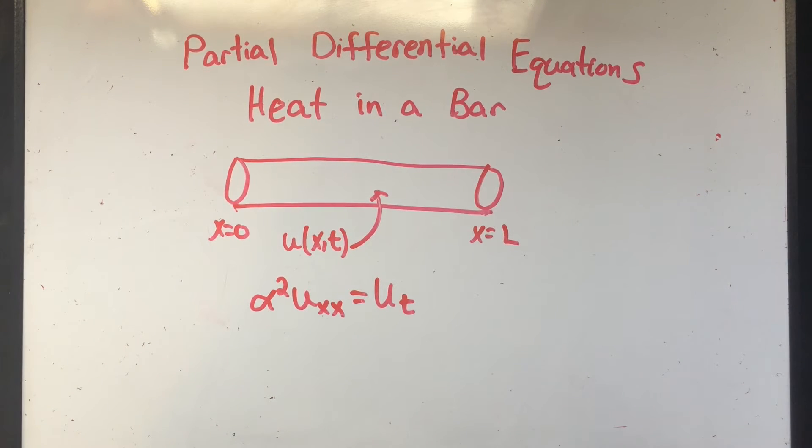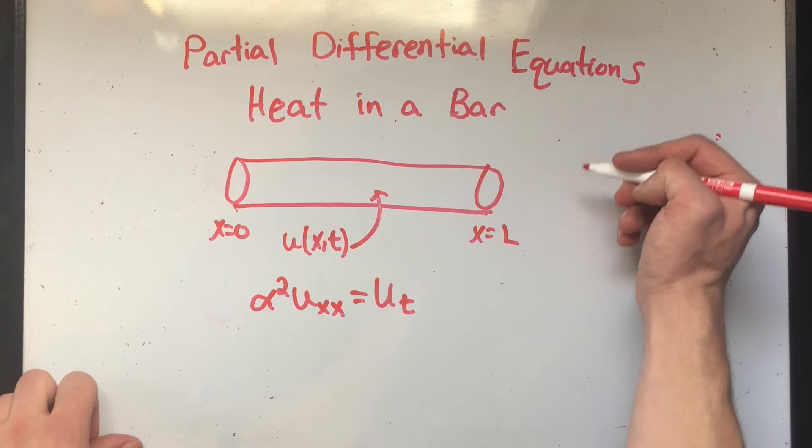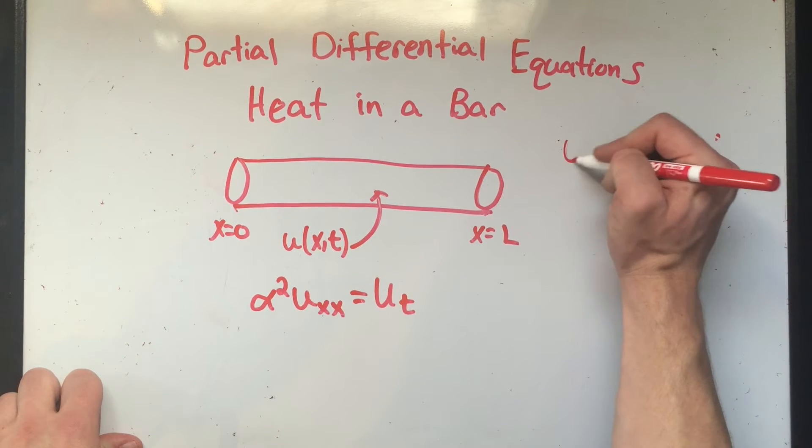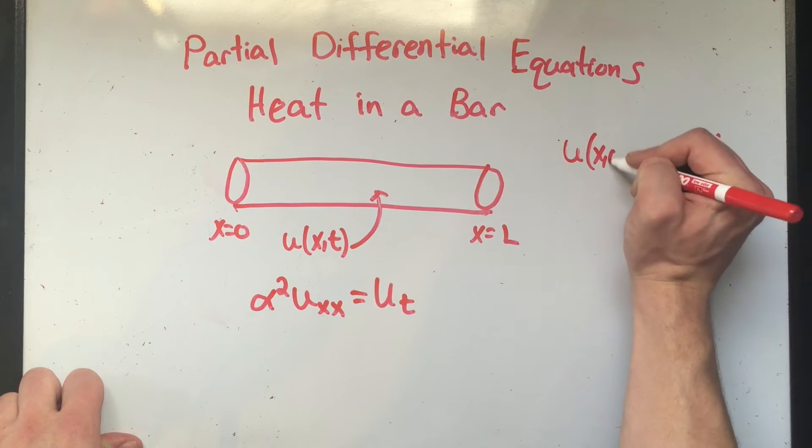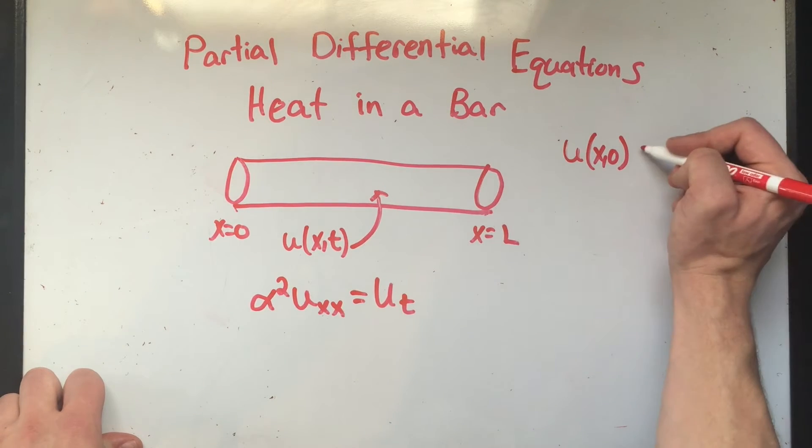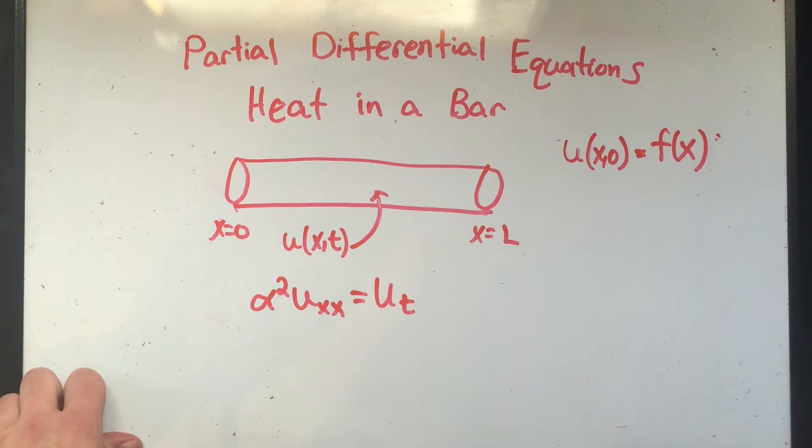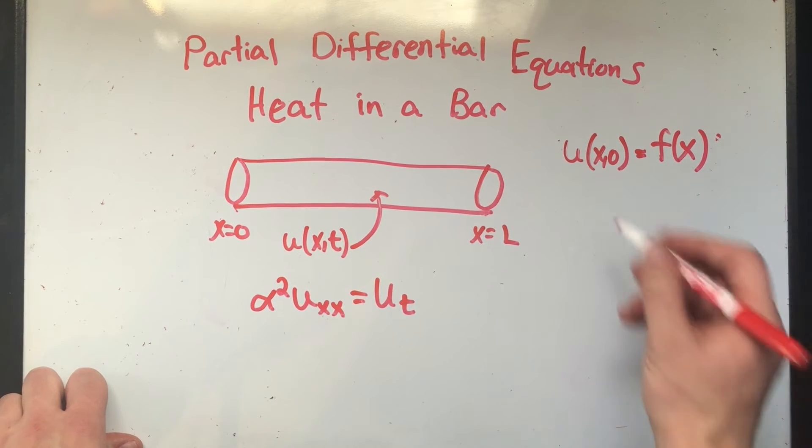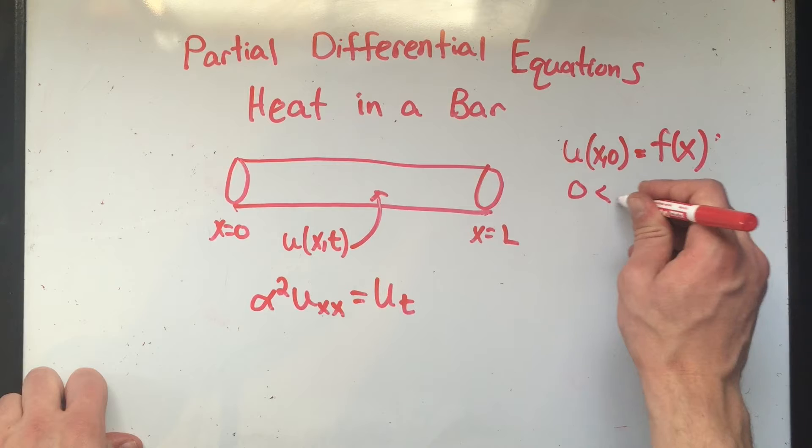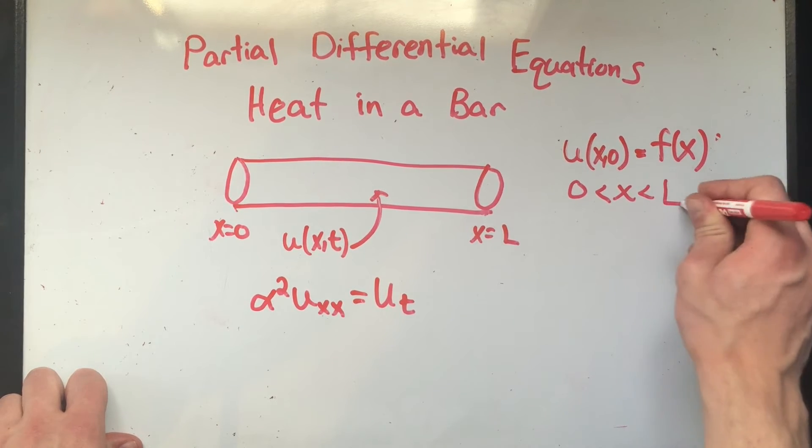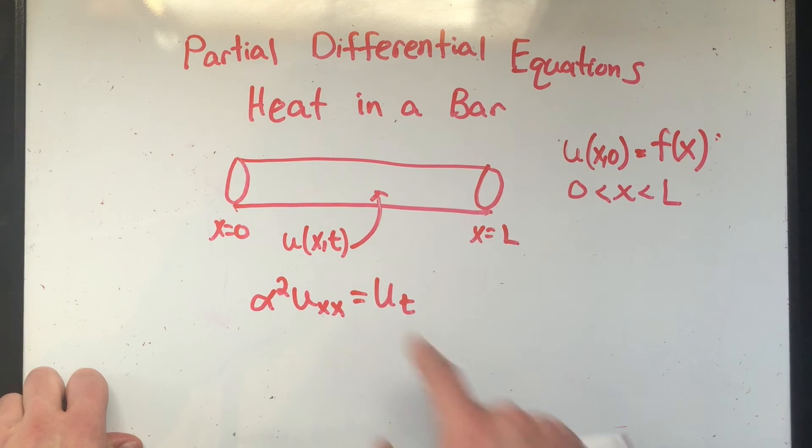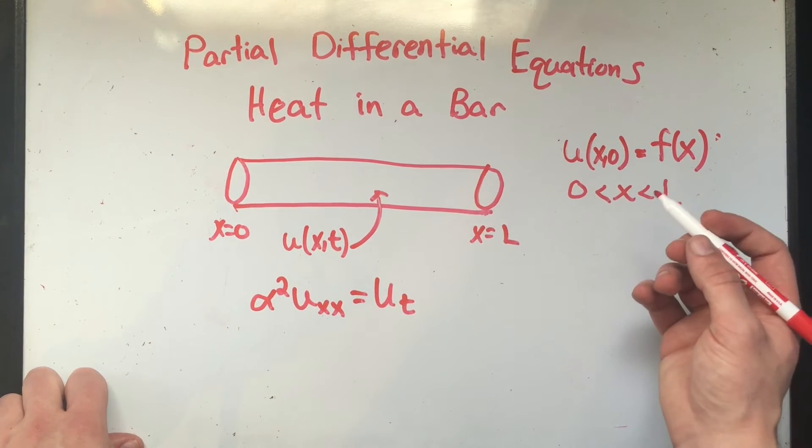Okay. We've got some initial conditions we got to talk about. So my function, if I plugged in zero for T, I would only have a function of X, right? Let's get that out of the way. And my X values are only going to be defined from zero to L. That makes sense, right? I'm only going to be talking about the values on the bar, nothing else.